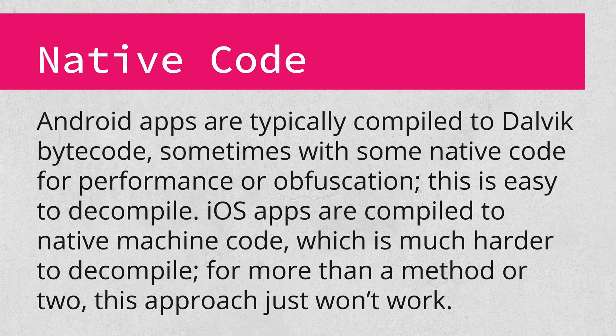The one that poses the biggest challenge reverse-engineering-wise is that iOS apps, with a few notable exceptions, are compiled straight to native machine code. In the Android world, you can decompile most apps pretty painlessly. They may have bits of native code, but usually those are small portions you can disassemble, read, or ignore entirely. That's not doable in the iOS world. Unless you're dealing with an app built with a JS-for-Native framework like React Native, Titanium, or PhoneGap, you're pretty much stuck disassembling the app and decompiling specific methods with a lot of manual work. This definitely raises the barrier to entry pretty considerably.